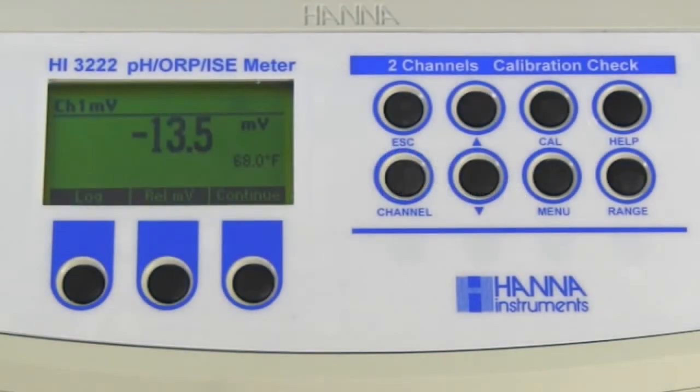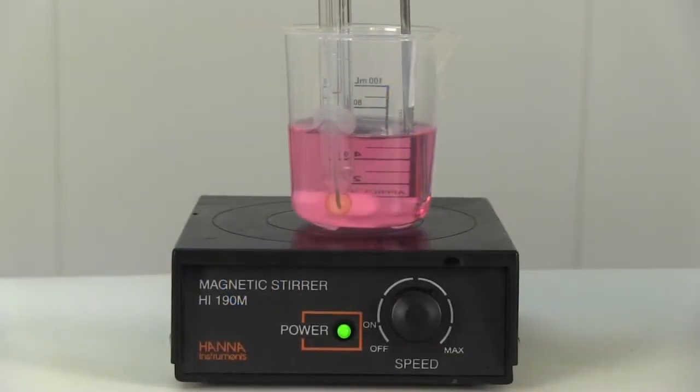We see that our HI1131B has an offset of negative 13.5 millivolt. Next, we need to determine the slope of the pH electrode.